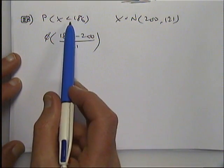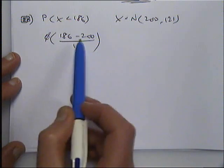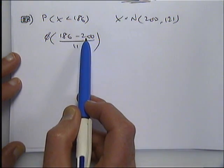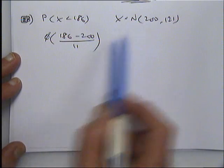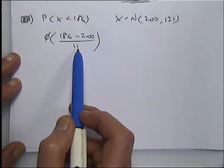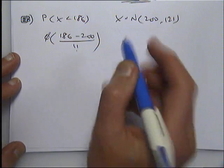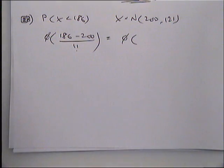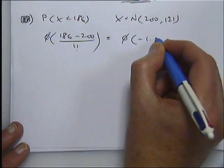You just always do X minus the mean over the standard deviation. It's a less than question, so you're going to have phi, there's your X value minus the mean mu, which is the first number in the brackets, divided by the standard deviation which is the square root of the variance. That comes out to be phi of minus 1.273.